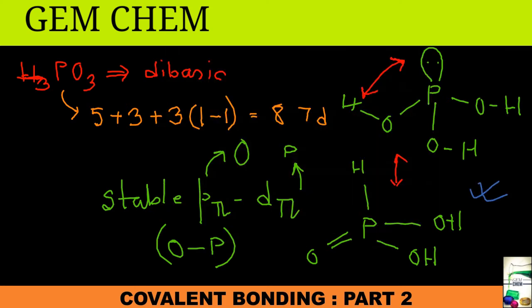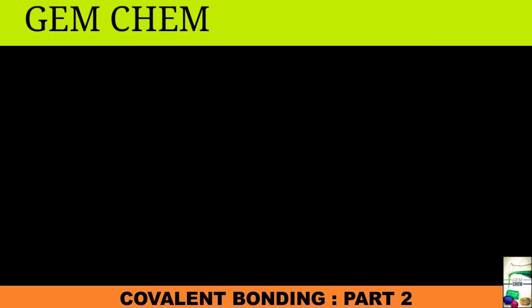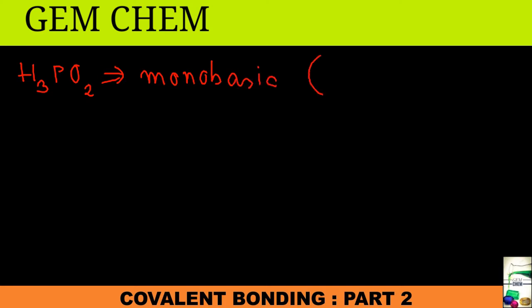The next structure, H₃PO₂, is a monobasic acid. You should try drawing its structure as homework.